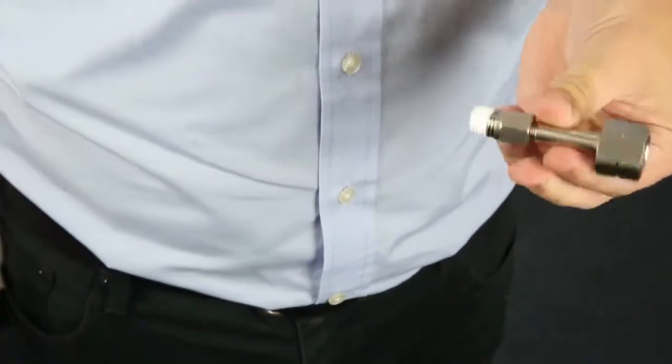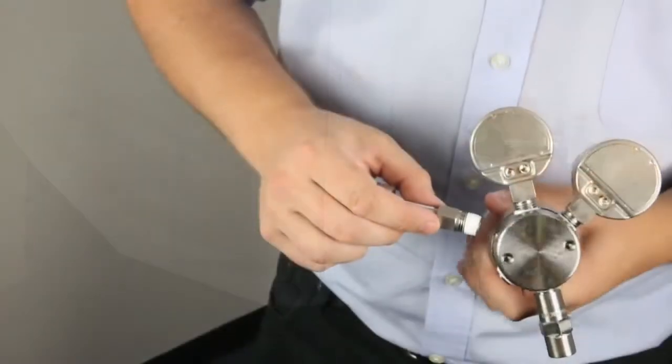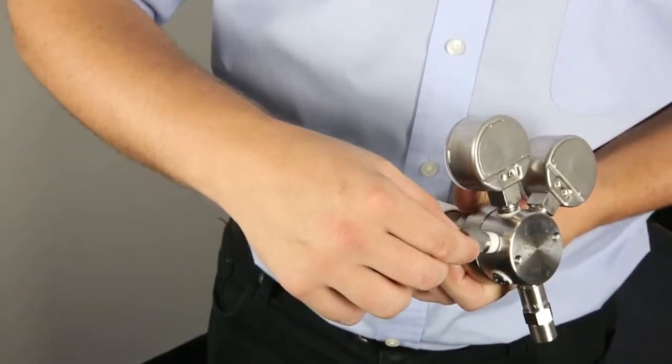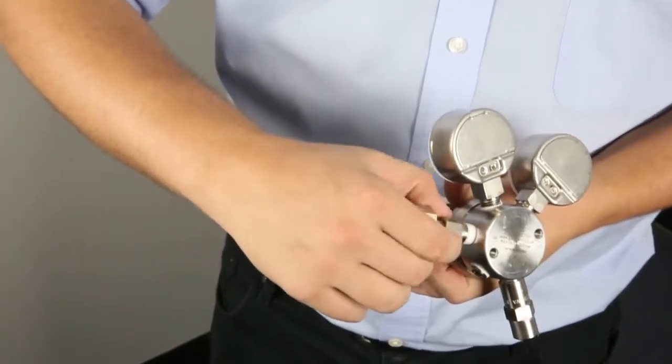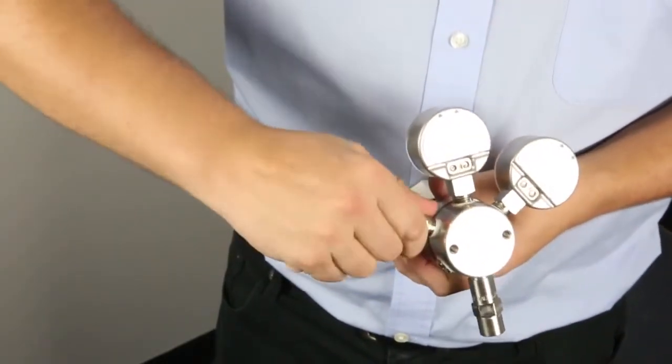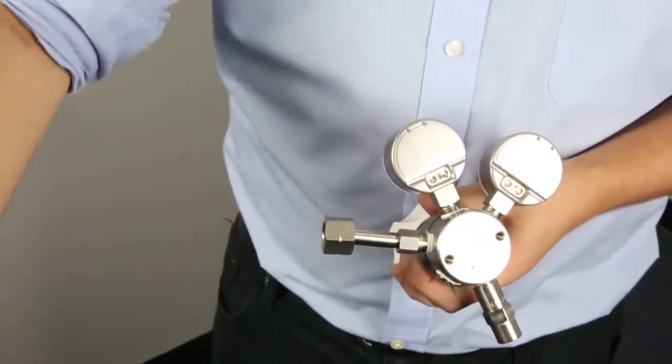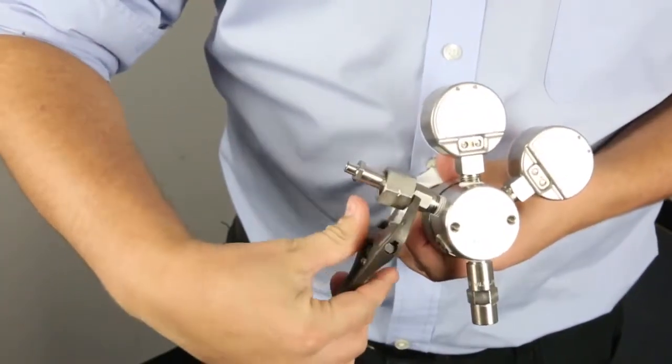When taping the thread of a cylinder connector it is important to remember a few key points. Firstly, make sure the tape starts at the first thread and does not come over the end of the connector. Also the entire thread doesn't need to be taped, it should generally not go beyond three quarters of the thread.